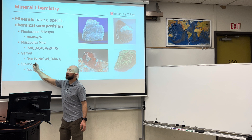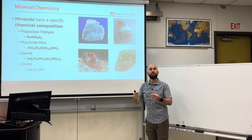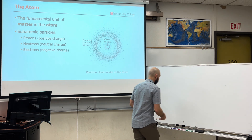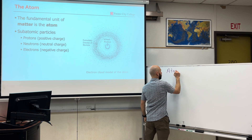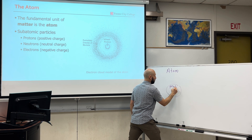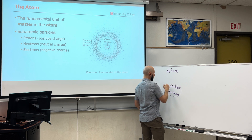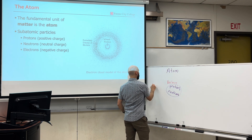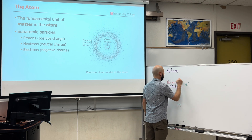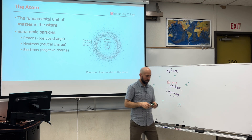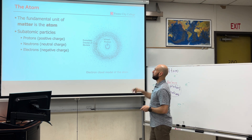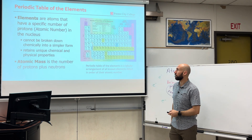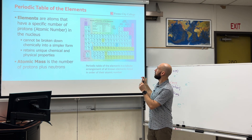The way that elements bond creates different types of minerals. This is why mineral chemistry is important. It starts with the fundamental unit of matter — the atom. The atom has protons and neutrons inside of its nucleus and electrons floating around it in the electron cloud. This is true for all atoms: protons, neutrons, electrons. Protons have a positive charge, neutrons are neutral, and electrons have a negative charge. And it is these charges that lead to chemical bonding.